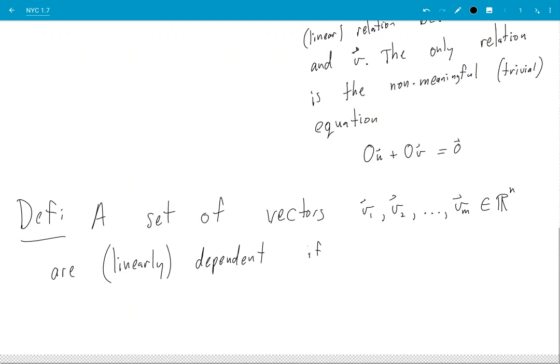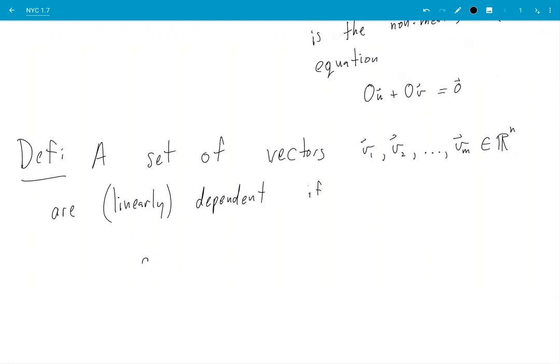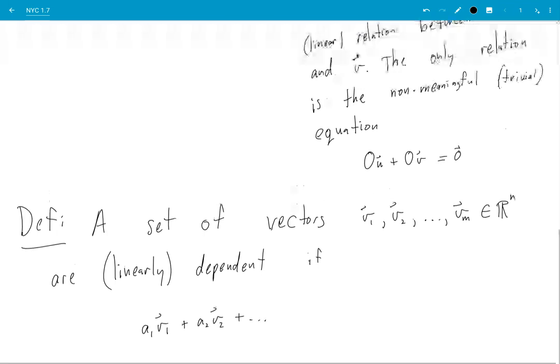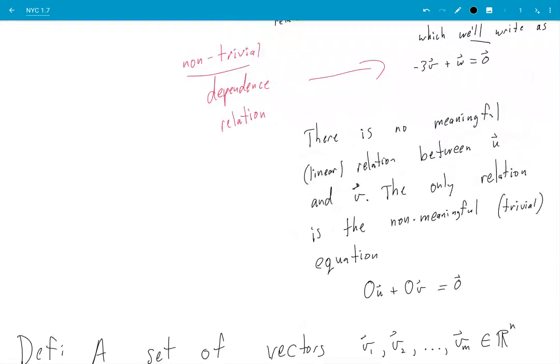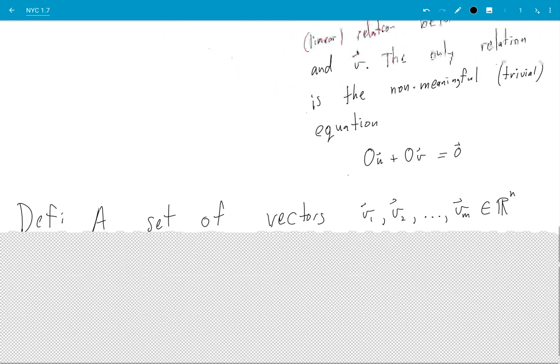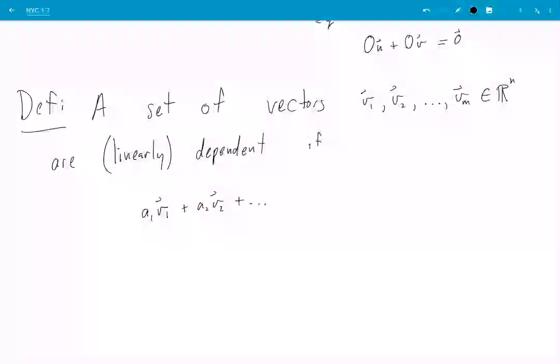...if we have some relationship. So what I'm writing down now is, basically, a non-trivial linear combination equals zero: a1v1 + ... + amvm = 0.